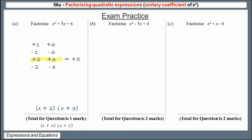Question B: x-squared minus 5x plus 4. We need two numbers that multiply to make plus 4. Listing those pairs, the particular pair that adds to minus 5 is minus 1 and minus 4. So our two brackets are x minus 1 and x minus 4. Again, if you have the brackets the other way round, that's not a problem.